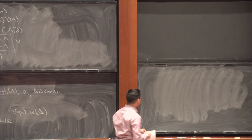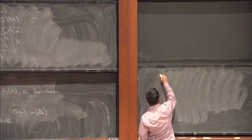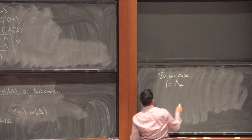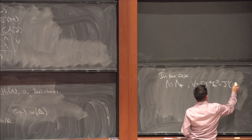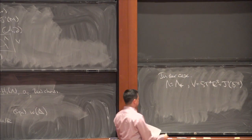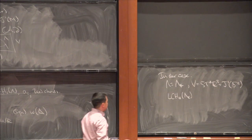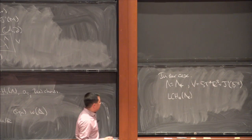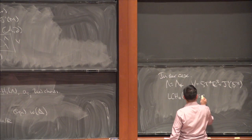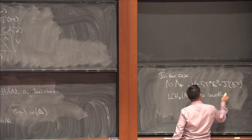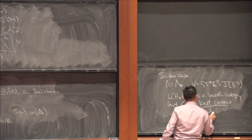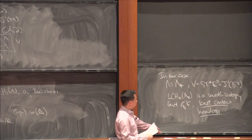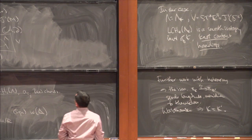In the setting we're interested in, Lambda is the Legendrian co-normal torus Lambda_K, and V is the co-sphere bundle of R³, which is also the one-jet space of S². What all this says is that the Legendrian contact homology of Lambda_K is an invariant of K itself — a smooth isotopy invariant of K, called knot contact homology.